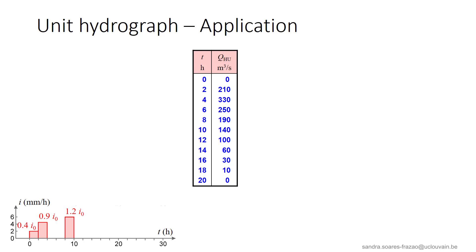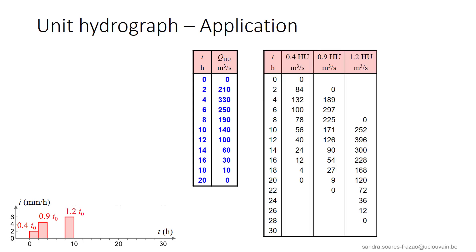An example of application is given here. Let us consider this arbitrary rainfall. The unit hydrograph of the catchment is described in the table with the discharge QHU at each time step. For a time step t0 of 2 hours, the intensity of the unit rainfall I0 is 5 mm per hour in order to form a volume of 10 mm. So, the intensities of the three parts of the rain correspond to 0.4, 0.9, and 1.2 times the intensity I0 of the unit hydrograph. To construct the resulting hydrograph, the first step is to calculate the ordinates of the hydrographs corresponding to each part of the rainfall by scaling the unit hydrograph, taking into account also the time lag of each elementary rainfall.